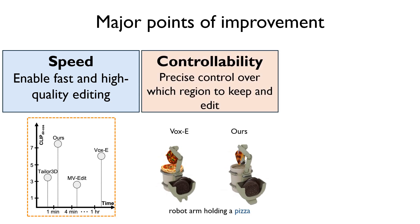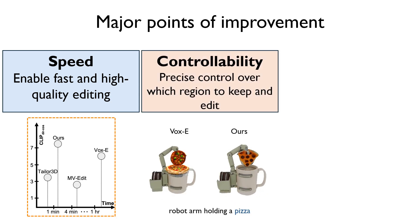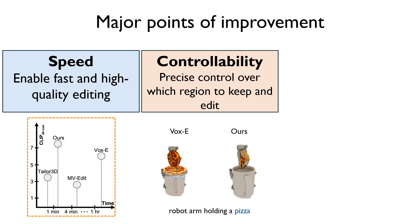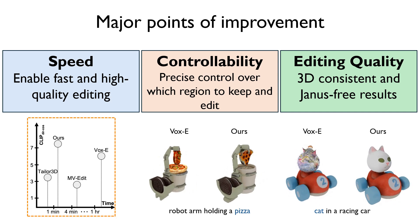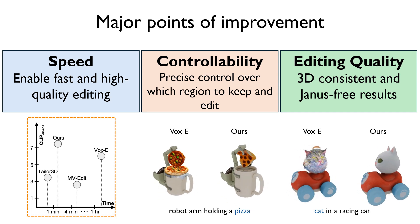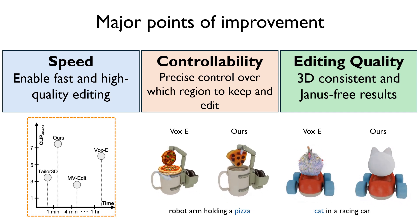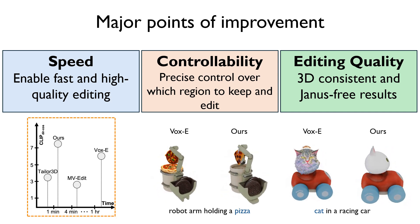Our merging algorithm incorporates both user masks and text prompts, enabling precise control over which regions to change. Unlike SDS-based methods, we can generate 3D-consistent shapes without visual inconsistencies.